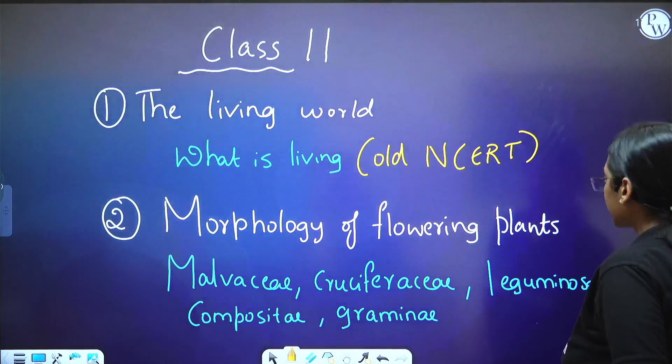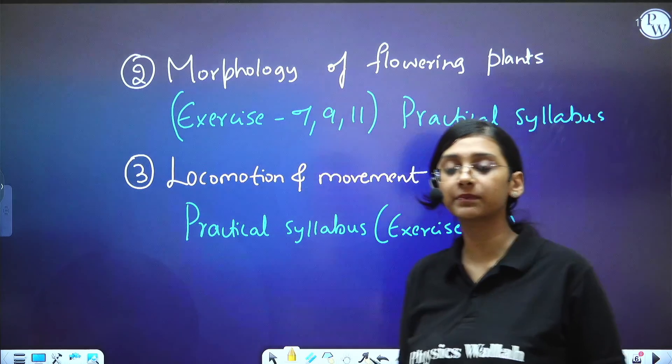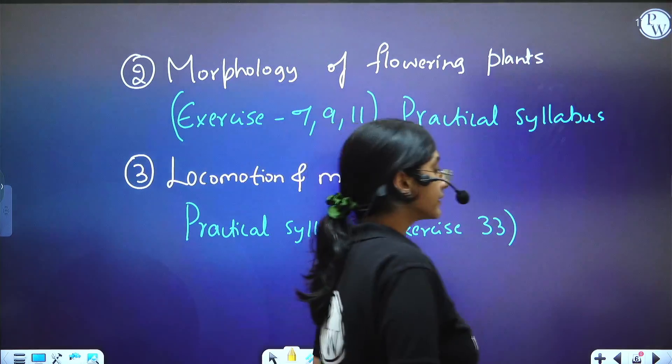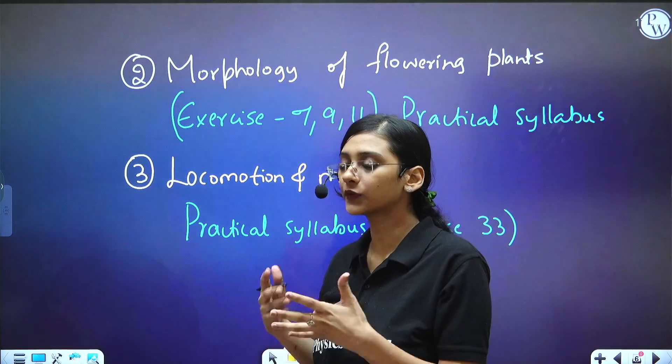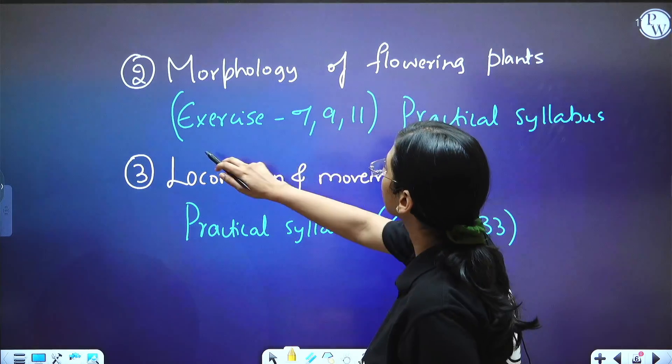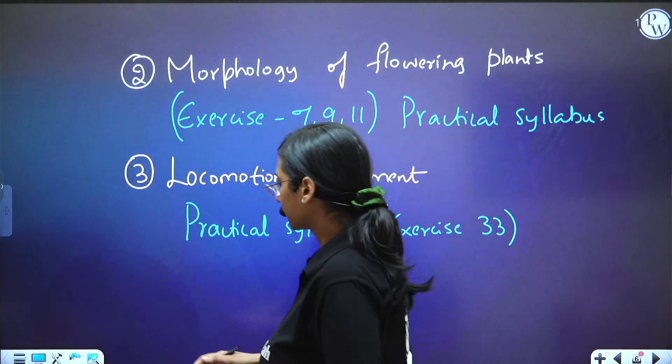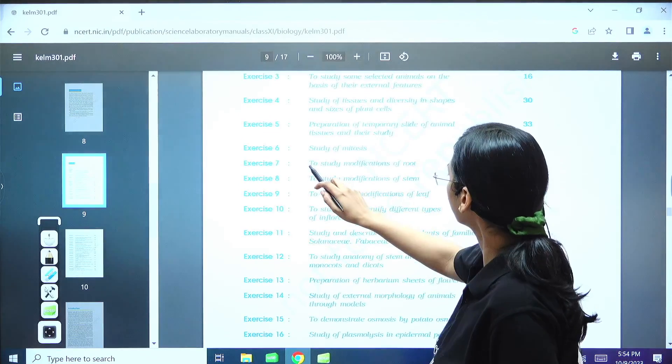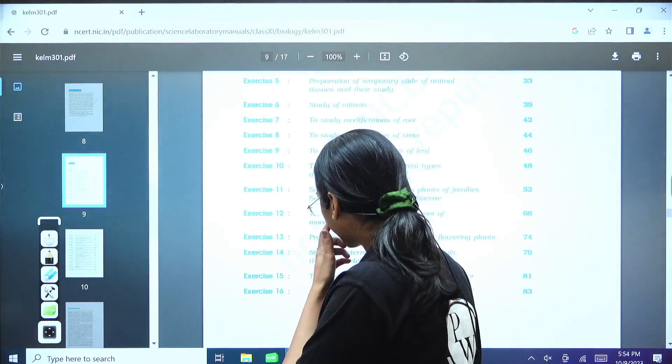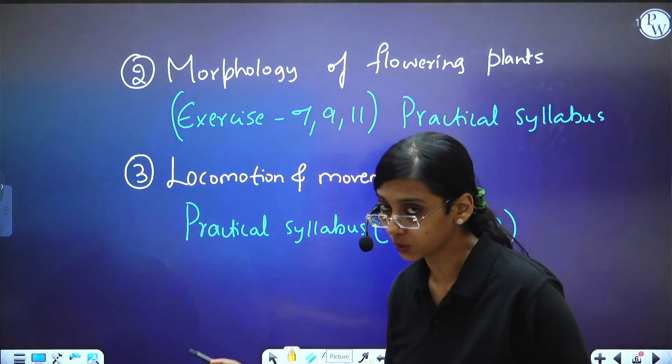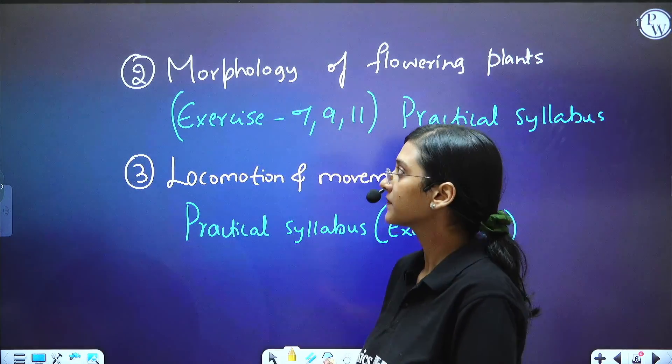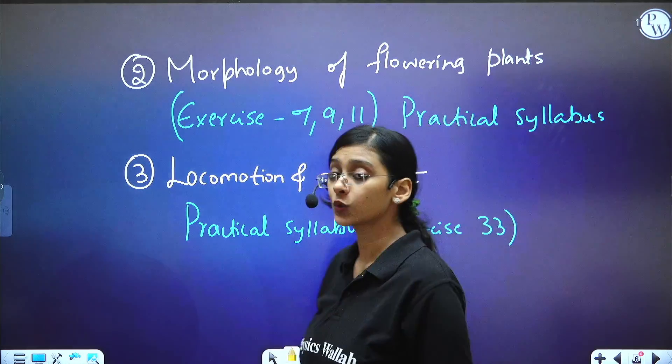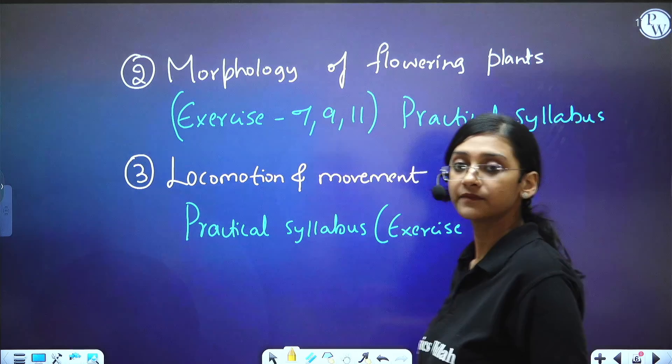And not just these two chapters, from the same chapter morphology of flowering plants, NMC said that they will be asking questions from practical syllabus. And if you want to know which is that practical syllabus that you have to study, I have given the exercise number, it is 7, 9, 12. So if you open the lab manual, you would be able to find 7, 9, 12, modification of root and all these things. So you might have to study from the practical parts. As of now NMC has given the syllabus, so according to the syllabus I am talking. So once again I suggest wait to study these concepts. Even from locomotion and movement, they suggested that they will be giving questions from the practical syllabus, exercise number 33, which is about human skeletal system.